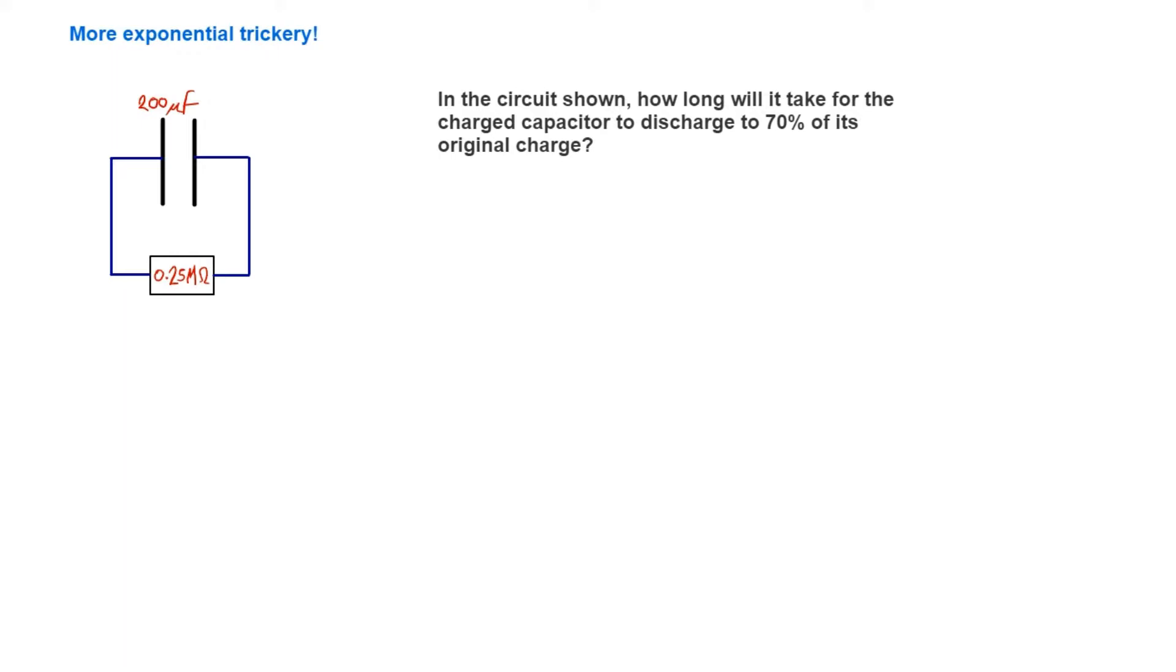The first thing to do is write down the exponential equation that we're going to work with. In this case, they're talking about charge - how long will it take for the charge to go down? But this could be potential difference or current, and it really doesn't matter. You just choose the equation.